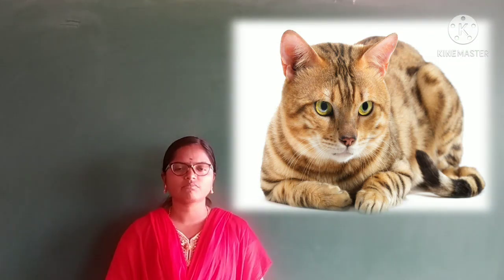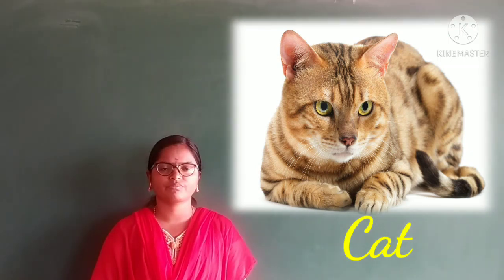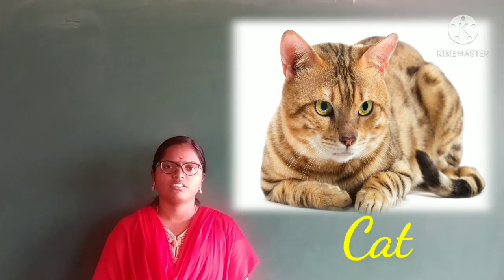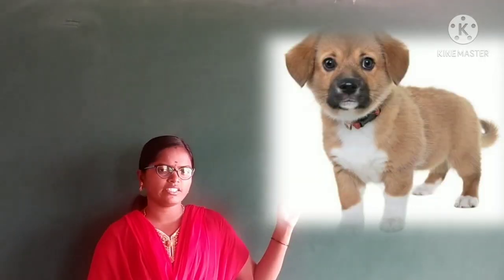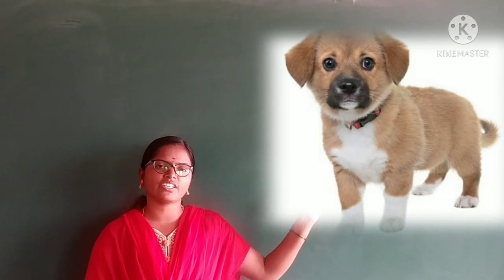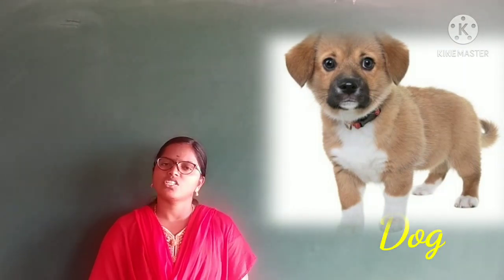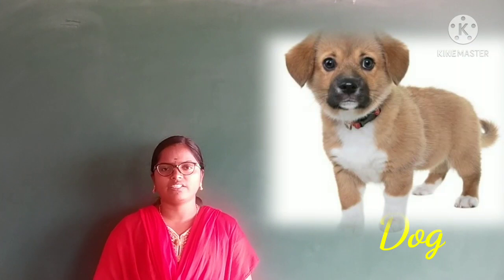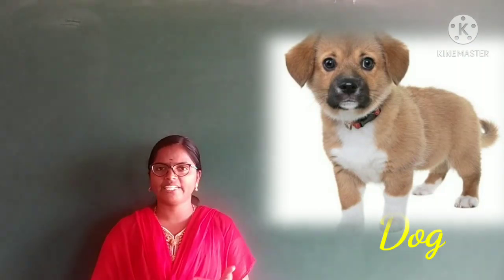Look here. Which picture is this? This is the picture of a cat. Now you can see — which picture is this? This is the picture of a dog. So this is a pet animal. Cat is also a pet animal, right?